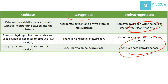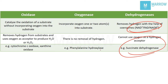Let us see about oxygenases. As the name suggests, they incorporate one or two oxygen atoms into the substrate. If they incorporate one atom of oxygen, they are monooxygenases. If they incorporate two atoms of oxygen, they are dioxygenases. An example is phenylalanine hydroxylase, which is a monooxygenase. We will discuss mono and dioxygenases in subsequent slides. The third class is oxidases, where oxidation is catalyzed without incorporation of oxygen.